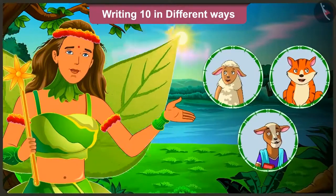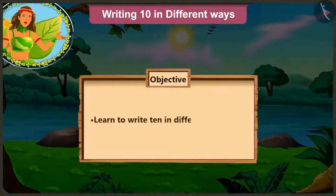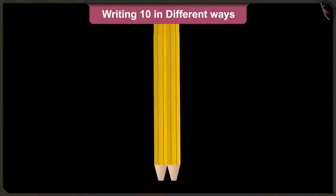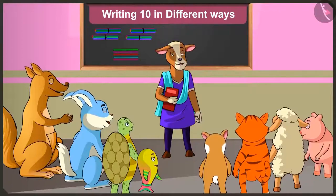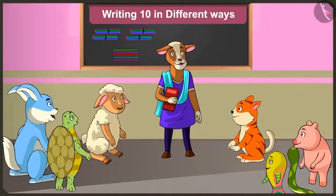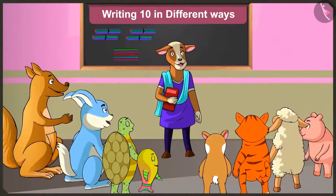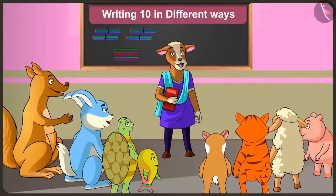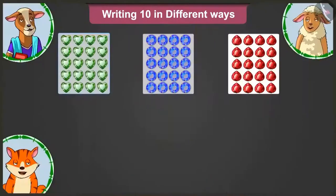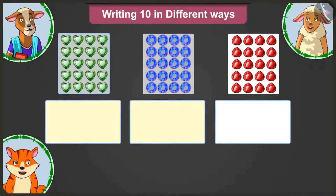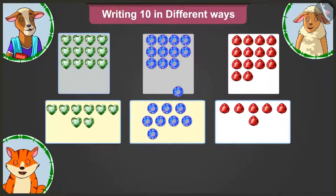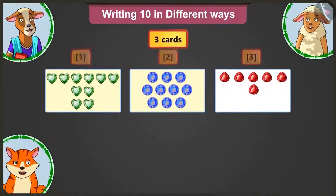With the help of this interesting conversation between Lily, Billy and their Corey ma'am. Good morning, children. Good morning, ma'am. Lily, Billy, you have learned making bundles of ten quite well, isn't it? Yes, ma'am. Children, today let me explain to you how to write ten in different ways. Look, I have some stickers. I will stick these stickers on cards in three different ways. Now, I have three cards with stickers.